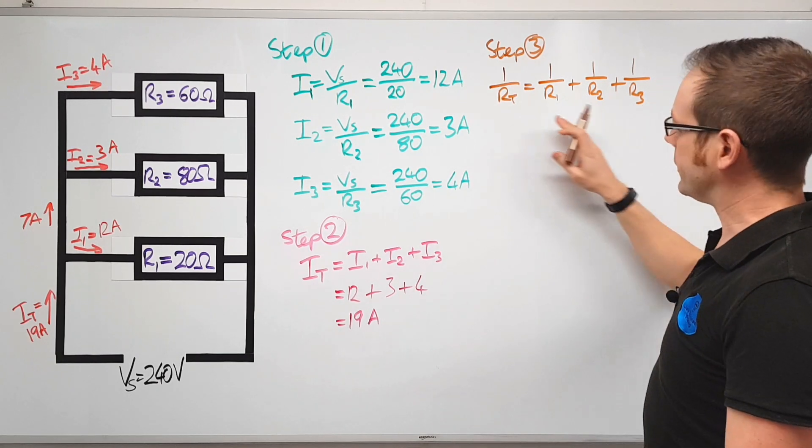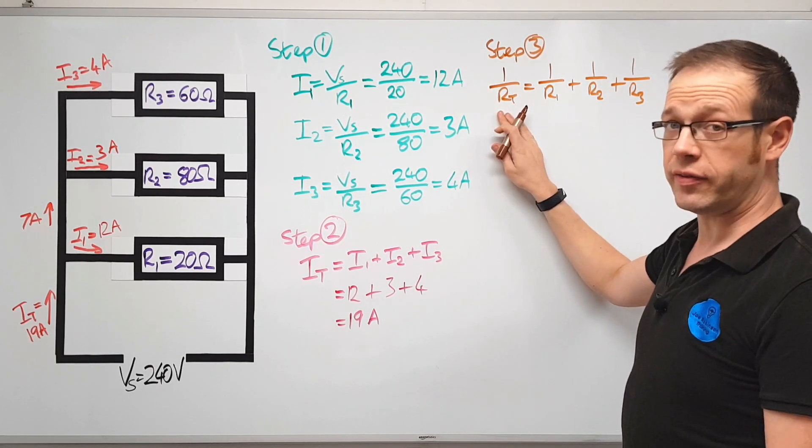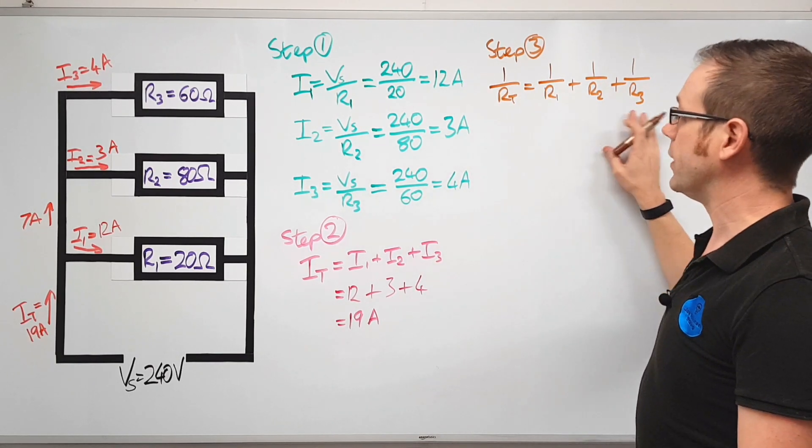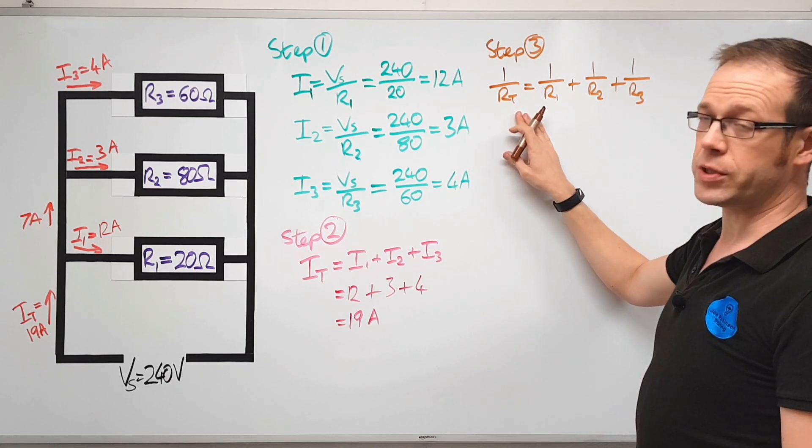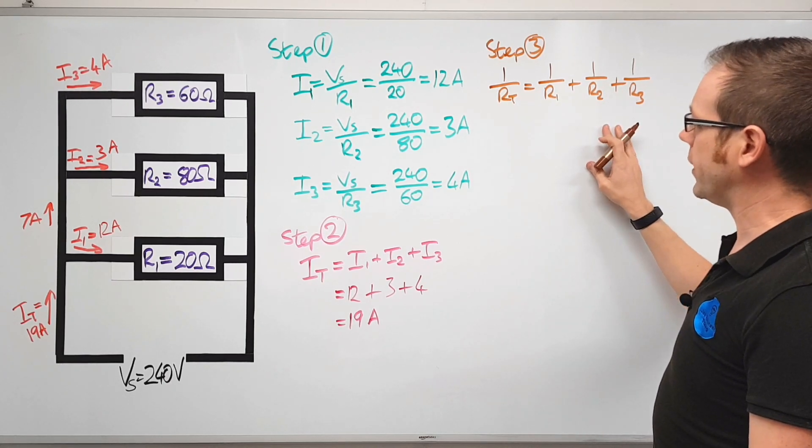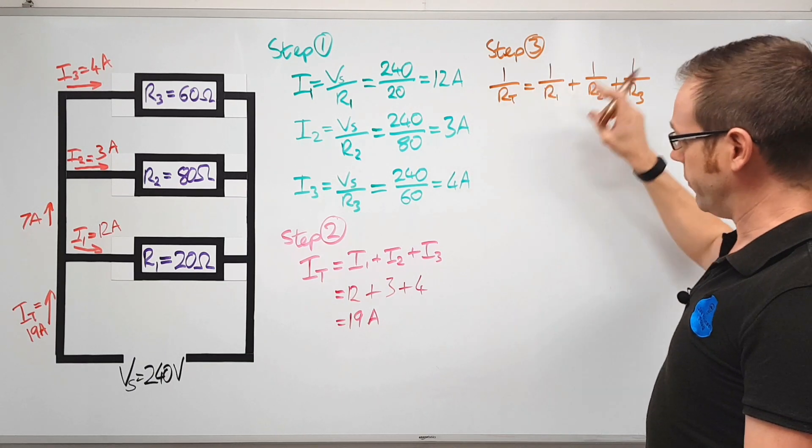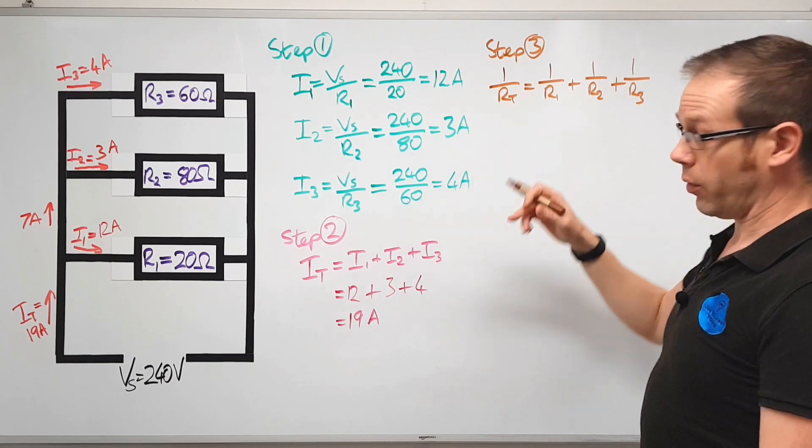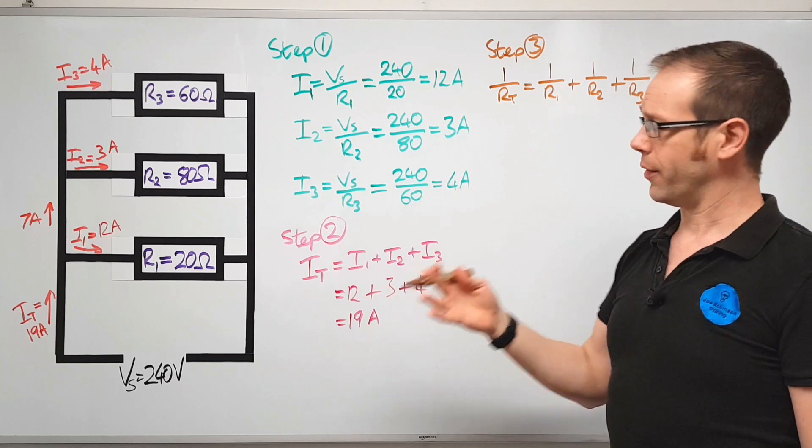So you can see there that we've got this formula which may look familiar to you if you've seen my other videos. If not then please go back and watch that because it does explain why this works the way it does. But here what we're doing is we're using the reciprocals of these values in order to figure out what the total resistance of the circuit is going to be.